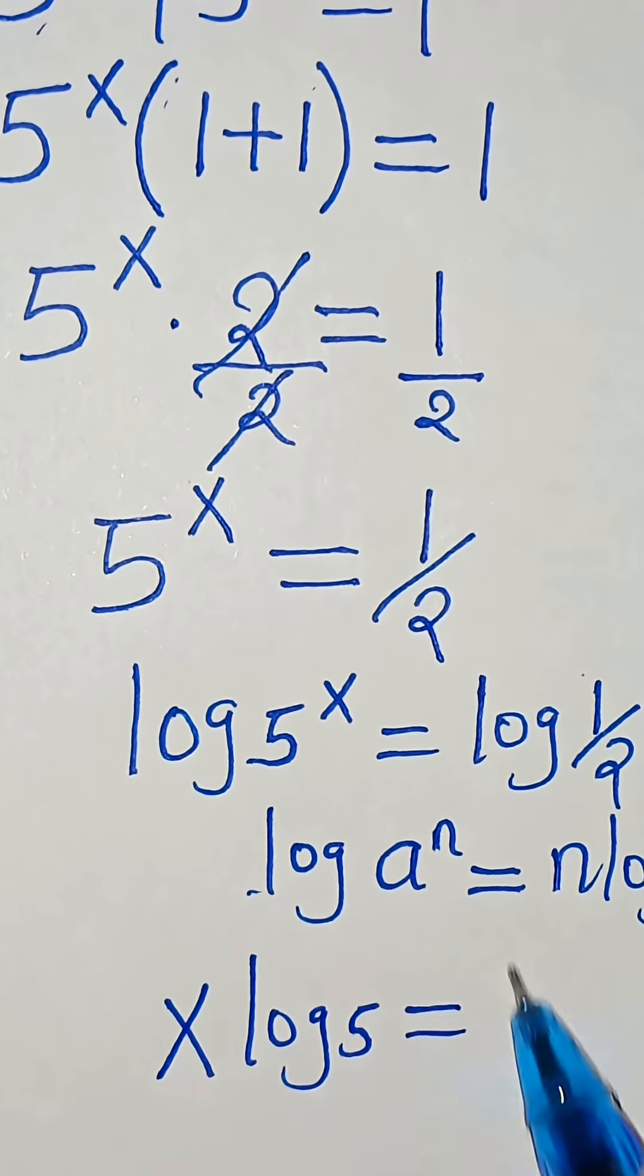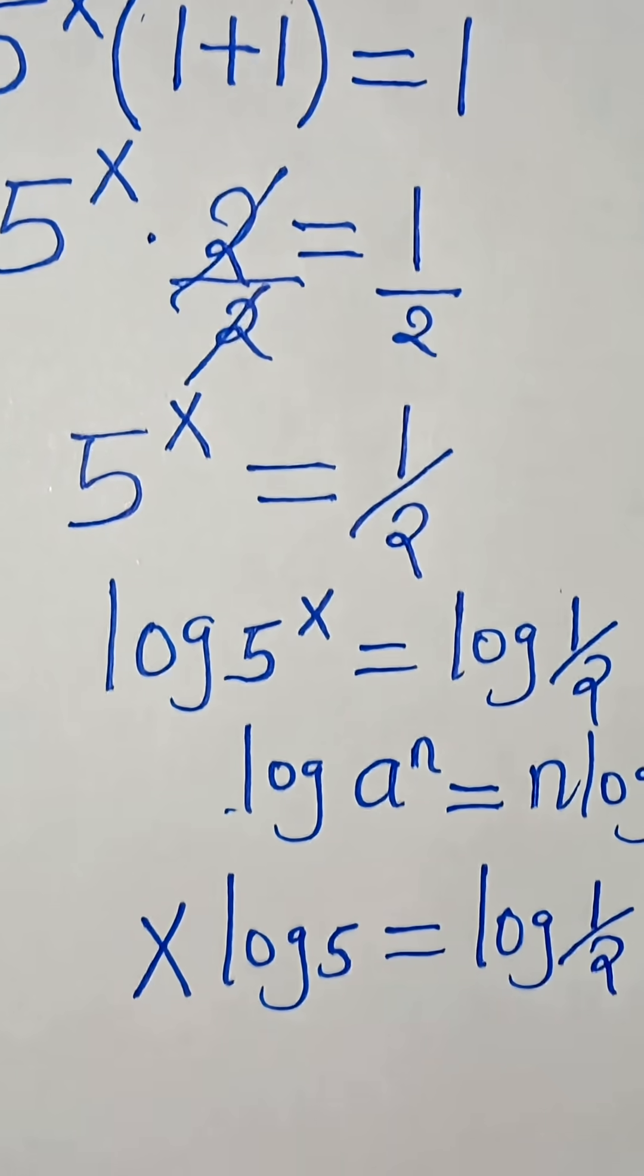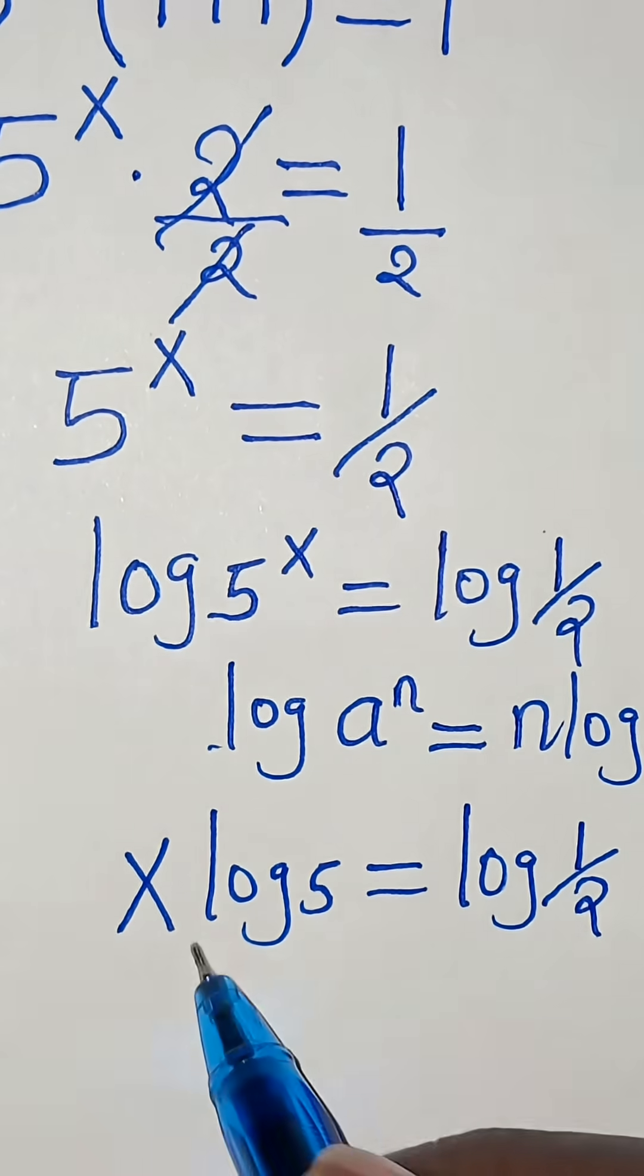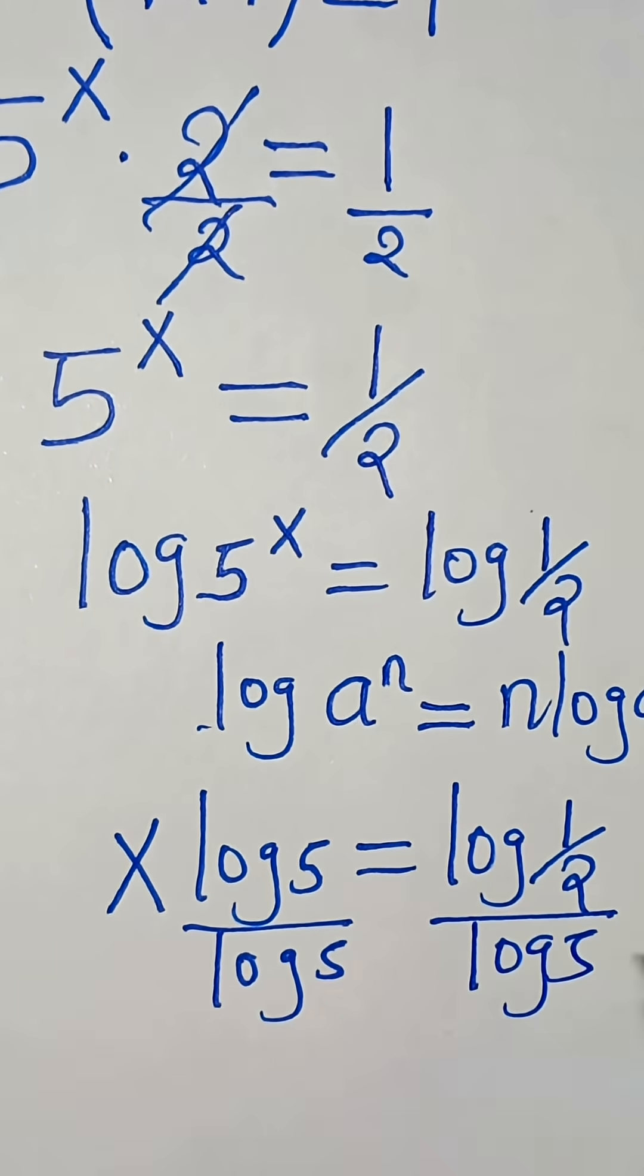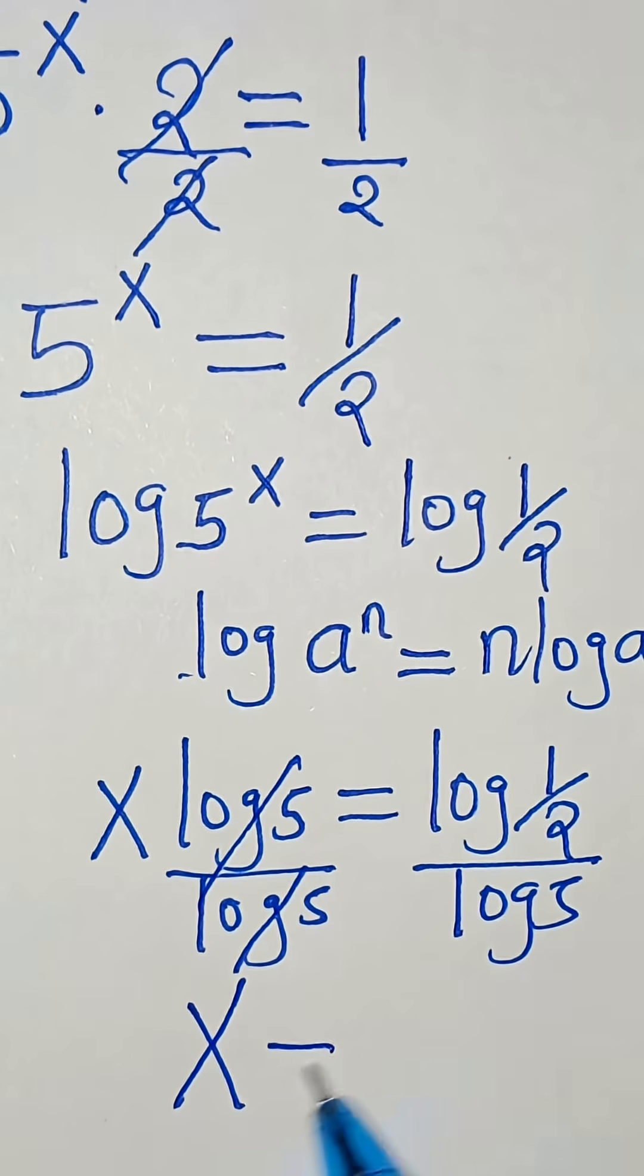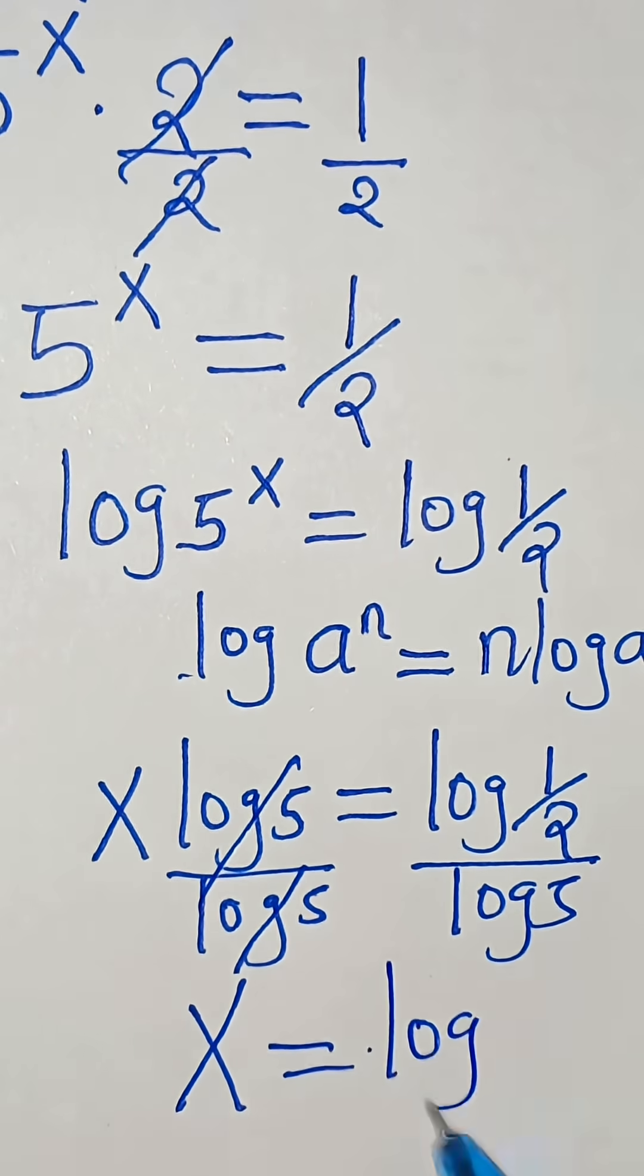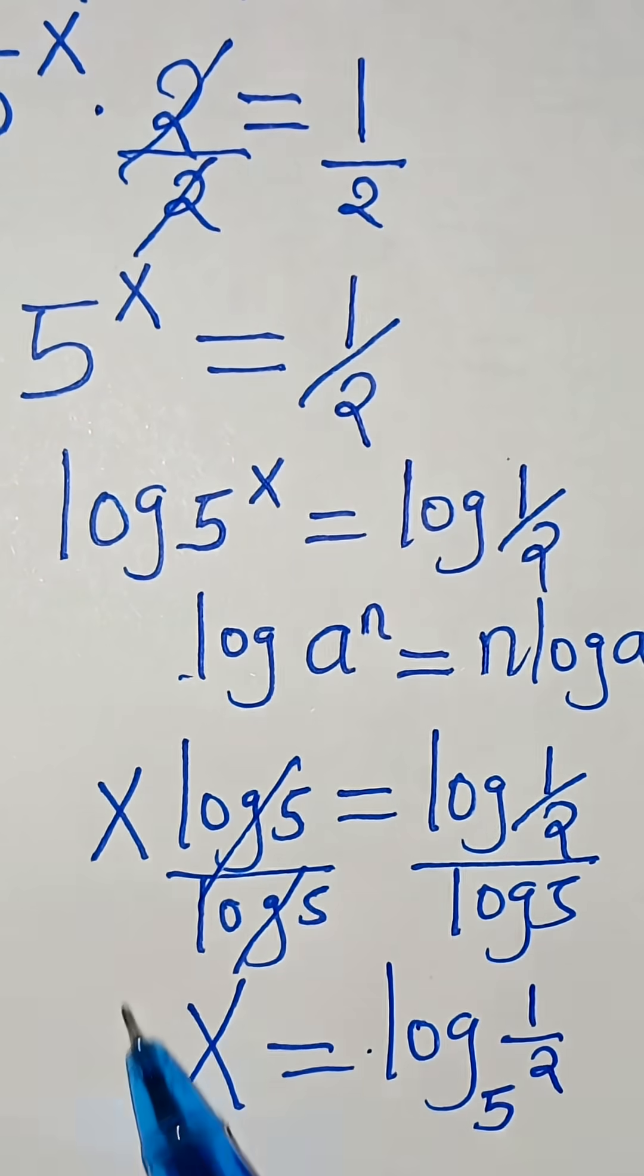Applying this power property, then we have x log 5, this is equal to log 1 over 2. So let's divide both sides by log 5. Now we have that x is equal to log one half divided by log 5.